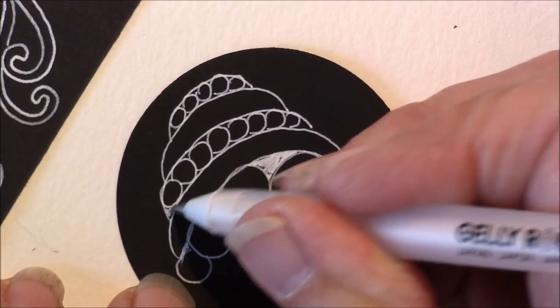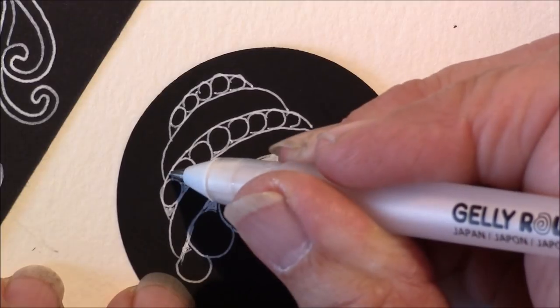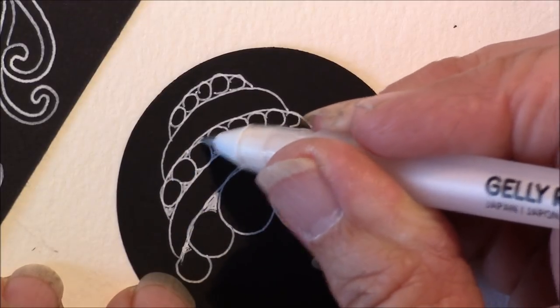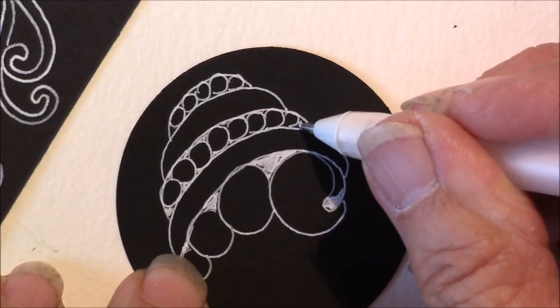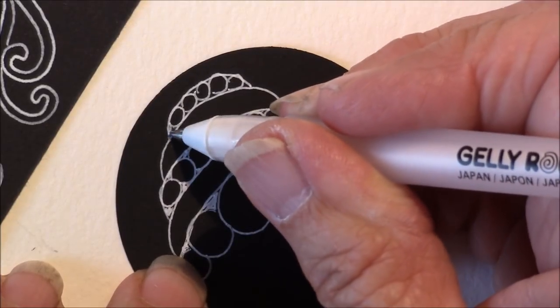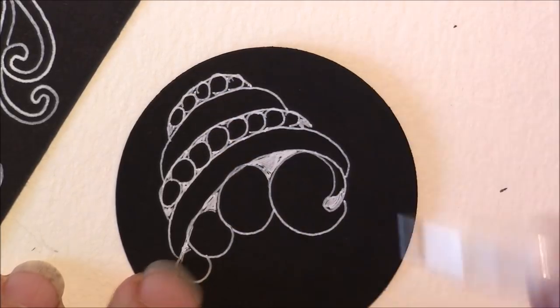In between these little spaces, I'm going to make it white. If you were doing this on a white tile, you would blacken in those spaces behind with your pen. Isn't that just simple?